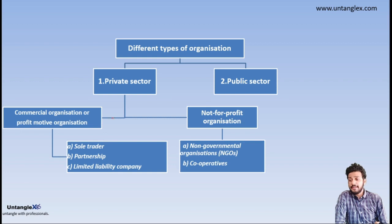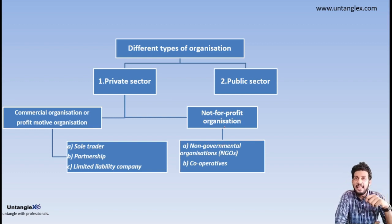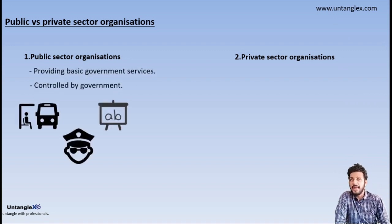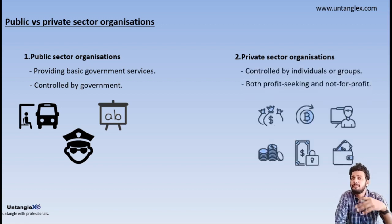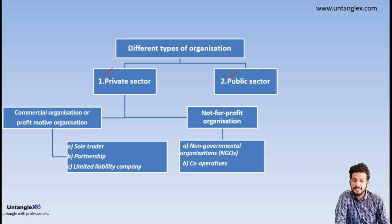Commercial organizations are divided into three types: sole trader, partnership, and limited liability company. Not-for-profit organizations are divided into non-governmental organizations and cooperatives. A public sector organization is owned and controlled by the government — examples include police and public transportation. Private sector organizations are owned by private individuals and are profit-seeking. Next we will discuss the types of commercial organizations in more detail.